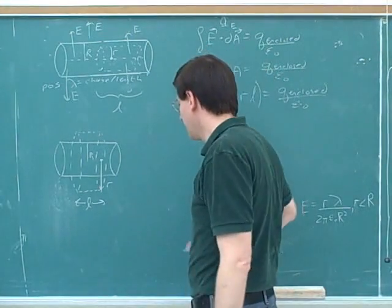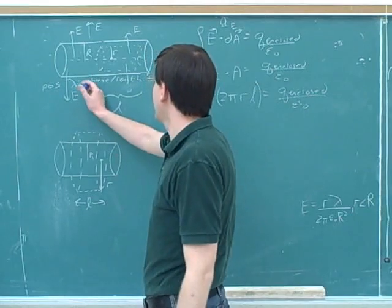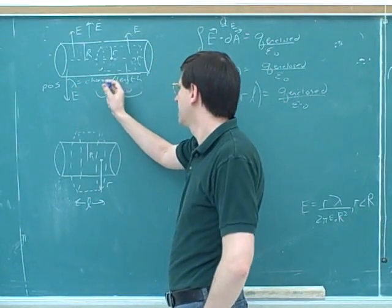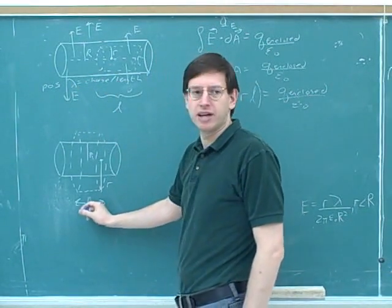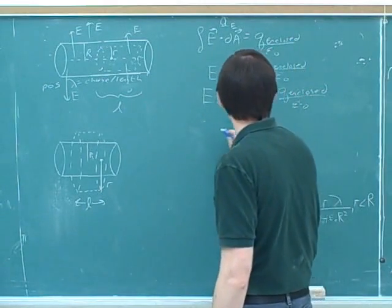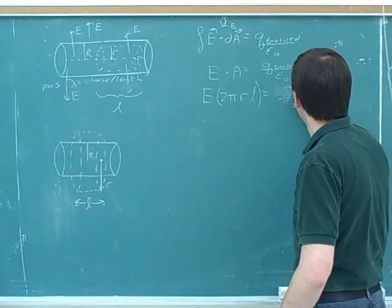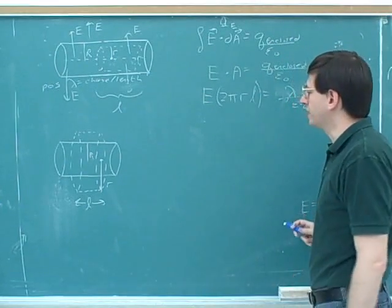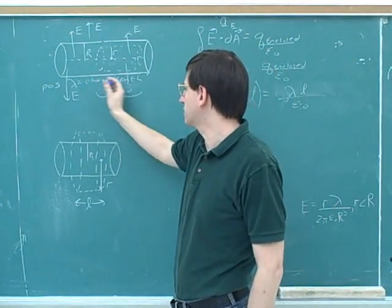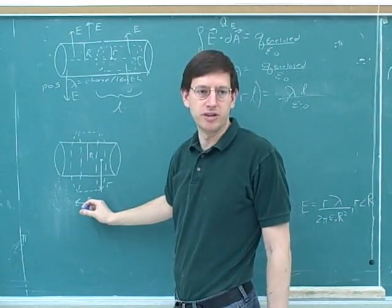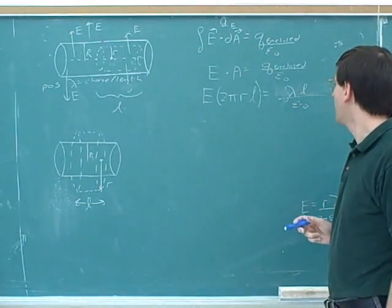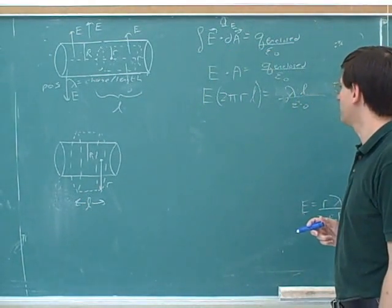So in this case, we know that there are lambda charges behind every unit length. Well, here we have L unit lengths. So for the enclosed charge, we can just put lambda times L. We can see that has the right units, because this is in coulombs per meter, and L is in meters, so that will come out to be coulombs, which is what we want.